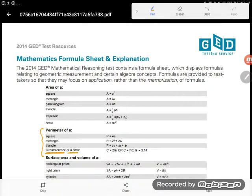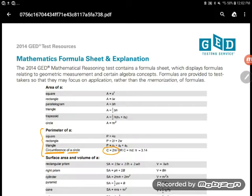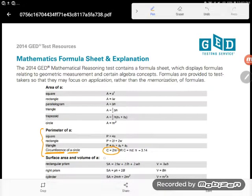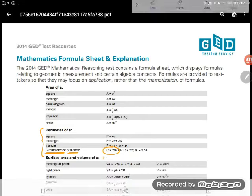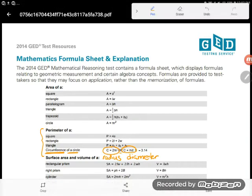But the tricky thing about this is you have two different formulas here. You have C = 2πr that has an r in it, r stands for radius. And you have C = πd that has a d in it that stands for diameter. And you have an or between them meaning you could use either one, it doesn't really matter and you have that freedom to choose whichever one is easier for you.